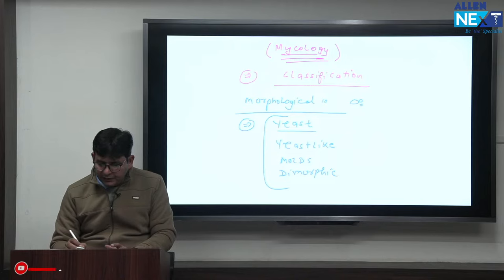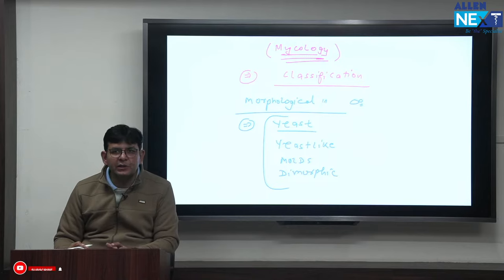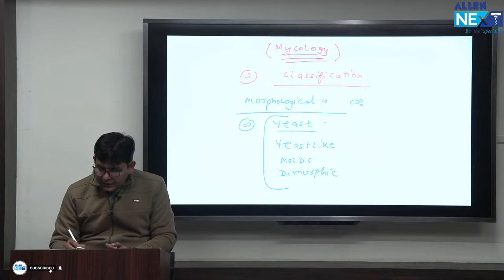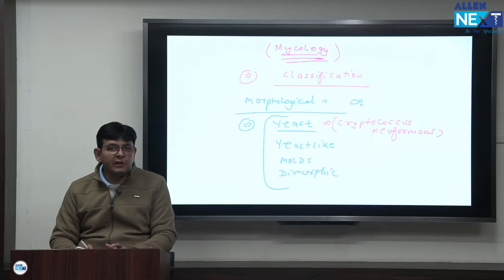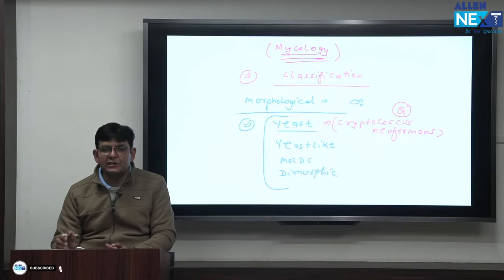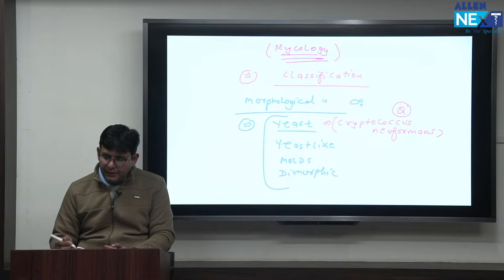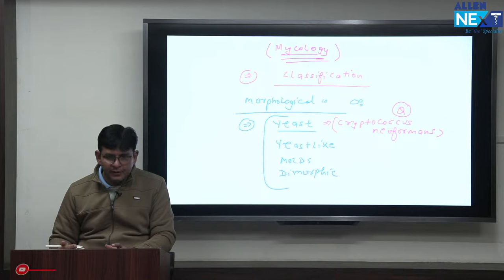If somebody asks what is true yeast, the answer is Cryptococcus — Cryptococcus neoformans. This is one of the causative organisms of meningitis in HIV-positive persons, and it is the most common cause of meningitis in HIV-positive individuals.